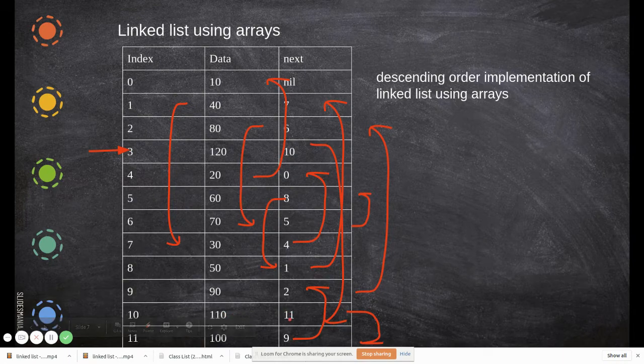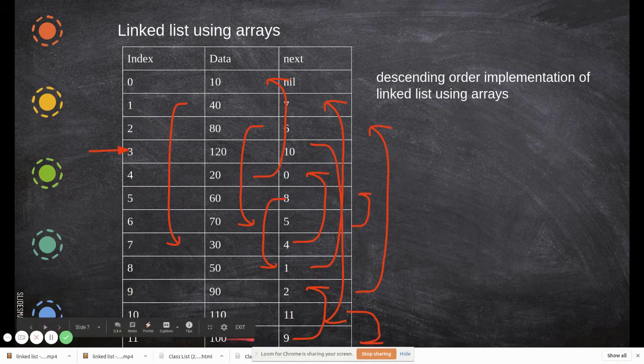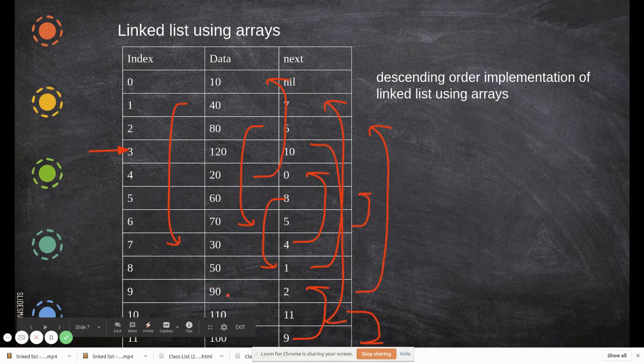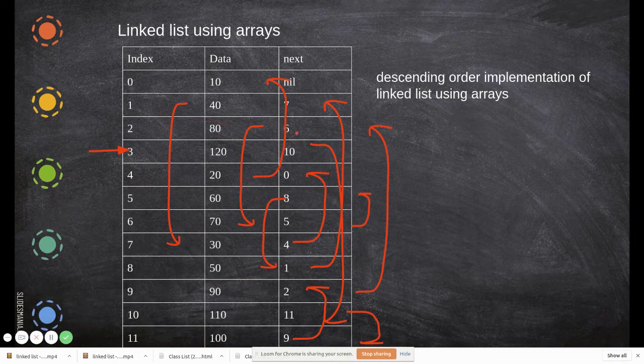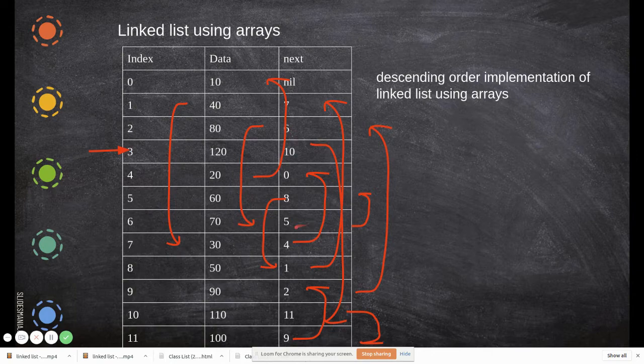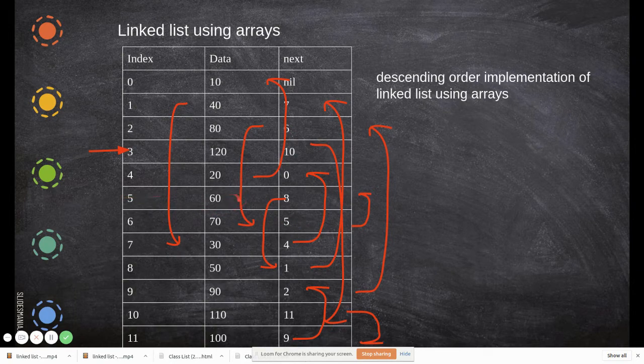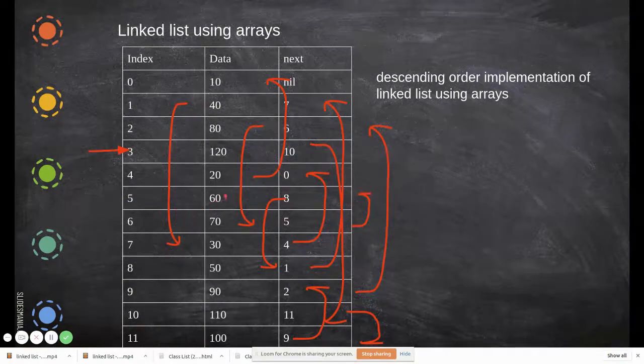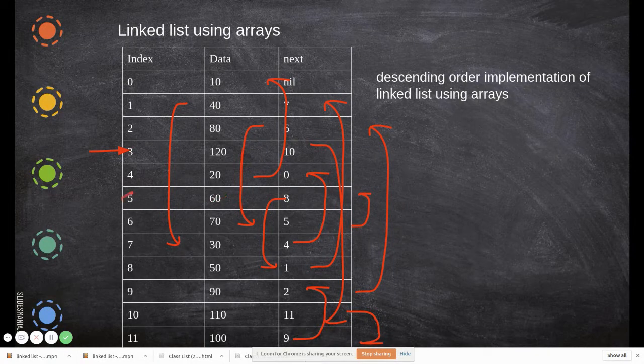Then you have to move to the next pointer, go to 10, then you check whether it is equal to 60 or not. No. Now you find this 11, and then you again check 60. Then 9, here it is not equal, then 2, here also it is not equal, then 6, not equal, then 5. Now it is equal.